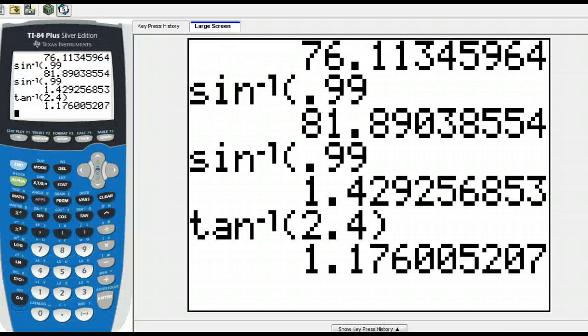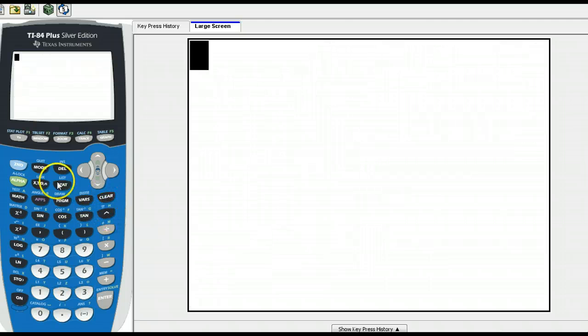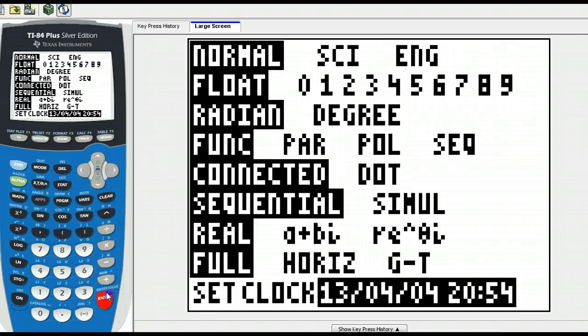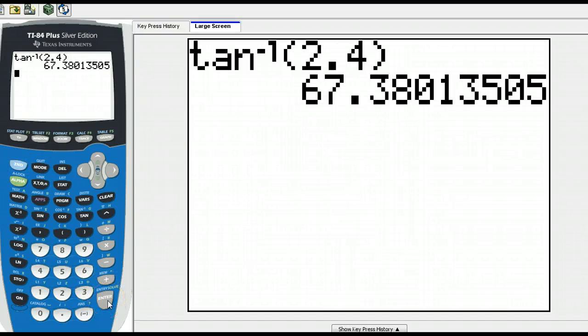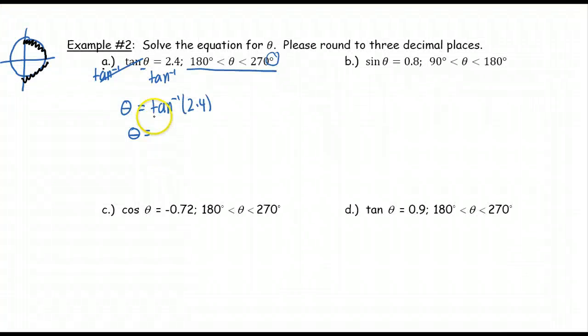You have to be careful because it says our angle is between 180 degrees and 270 degrees. So that means our calculators need to be in degree mode. So just make sure you have your calculator in the right mode. Again, we're going to do tangent inverse of 2.4. So our angle is actually 67.380 degrees. At least that's what our calculator gives us.